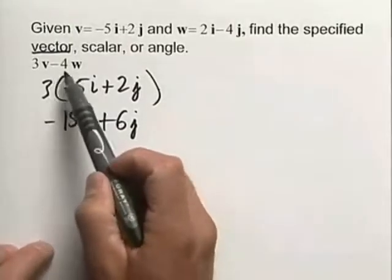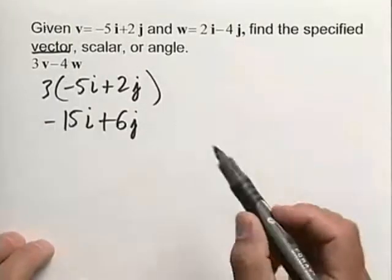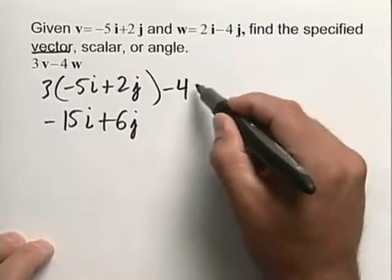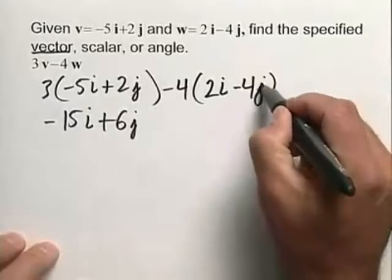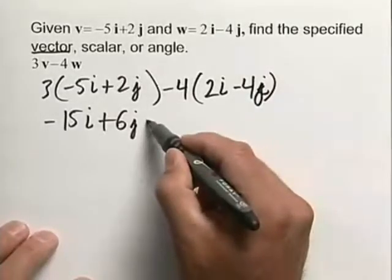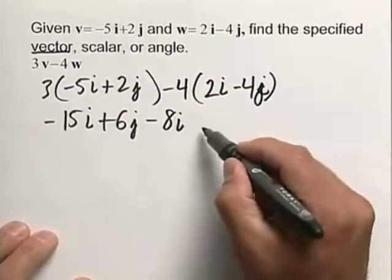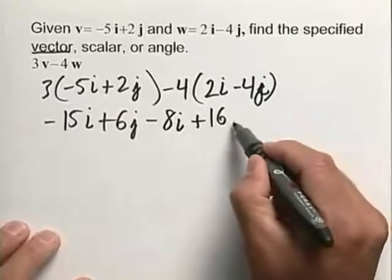Then we'll consider the scalar multiplication of negative 4w. So if we write this in the following fashion, we'll be nearly done here. This is a j, that's a j. So distributing, we come up with negative 8i plus 16j.